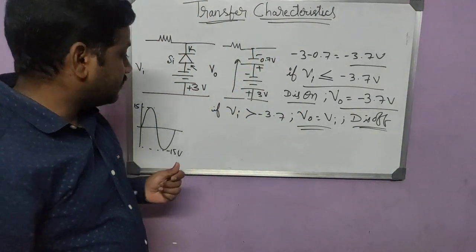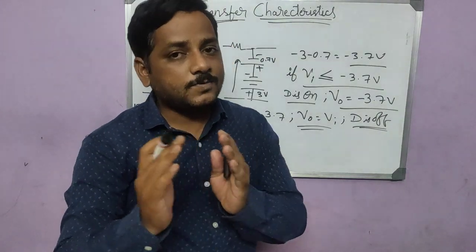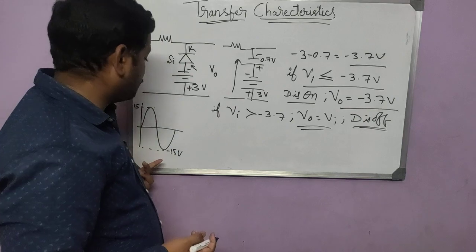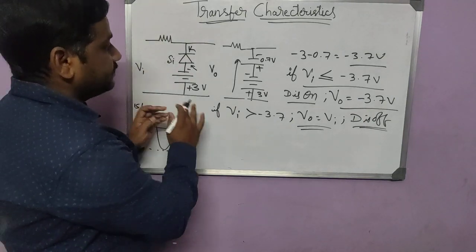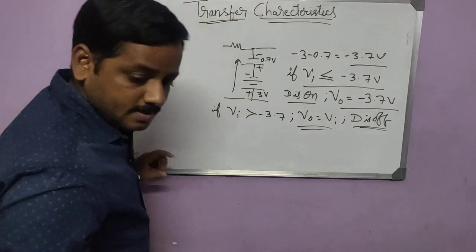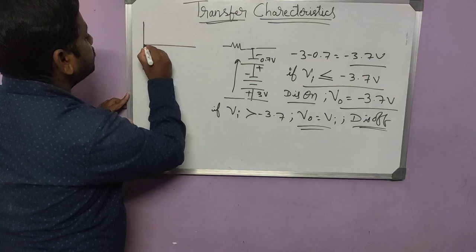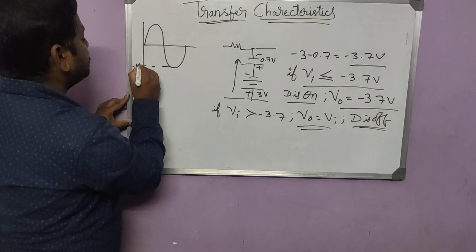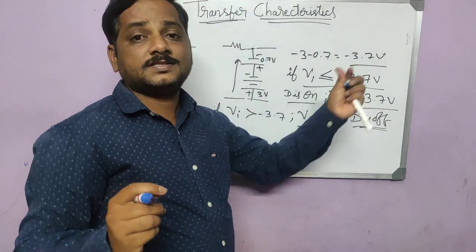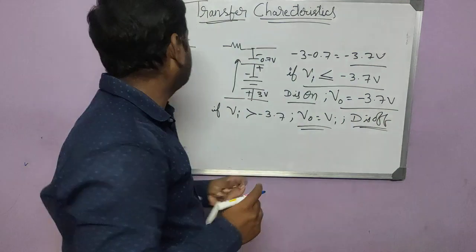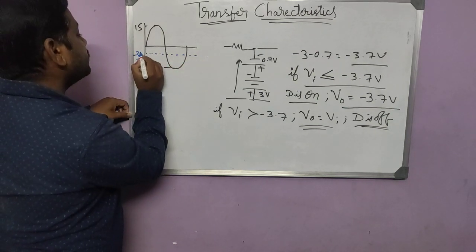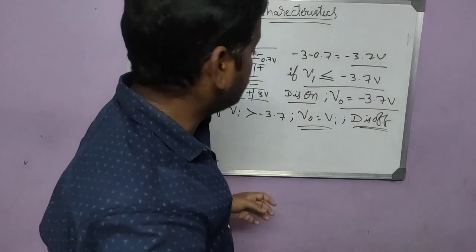Now let's come to plotting the output waveform before drawing the transfer characteristics. The input is a sine wave from minus 15 to plus 15 volts. First, identify the cutoff voltage, which is minus 3.7 volts. Highlight it on the waveform — it is in the negative region, somewhere here at minus 3.7 volts.